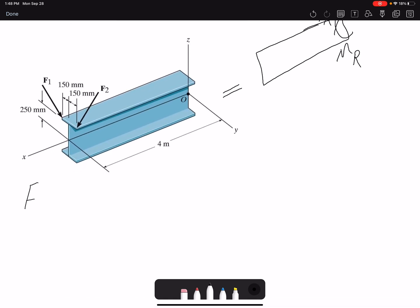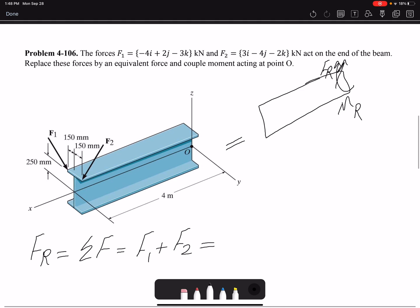So FR, the resultant force should be the same as summation of forces, which in this case is F1 plus F2. And the problem makes our job easier because the forces are given in Cartesian form. And in Cartesian, each component is a scalar. So we could simply add them together.